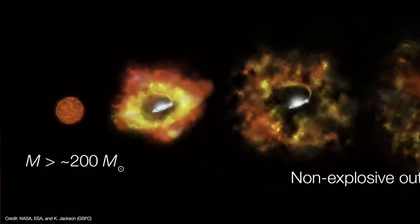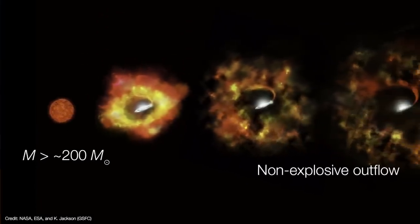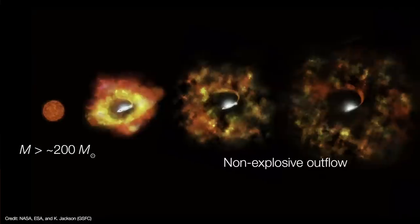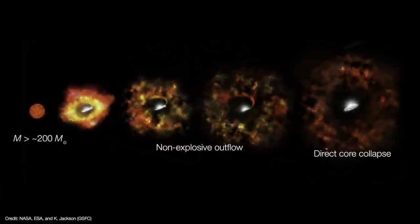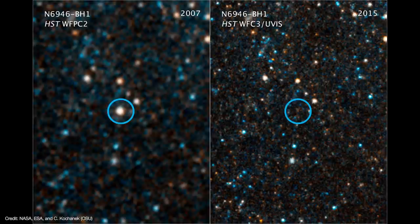Meanwhile, stars above 200 solar masses are thought to eventually collapse directly into a black hole without any explosion whatsoever. In fact, we've seen stars just disappear without a trace. These direct-collapse black holes can weigh as much as 120 solar masses.